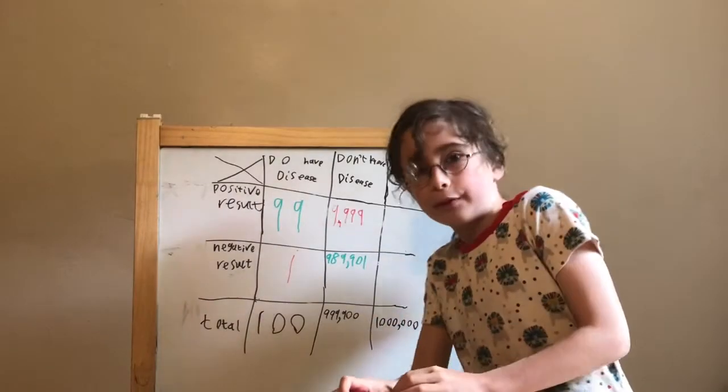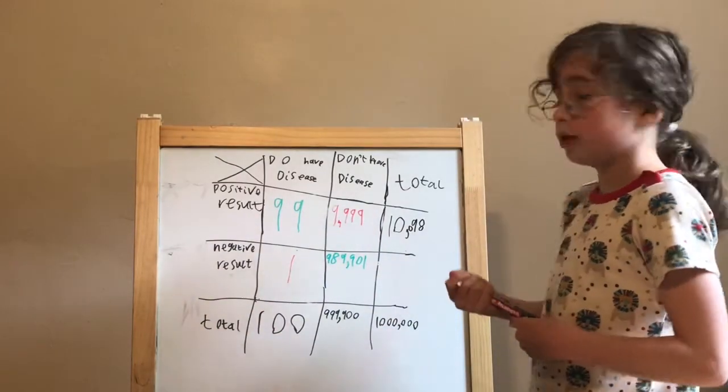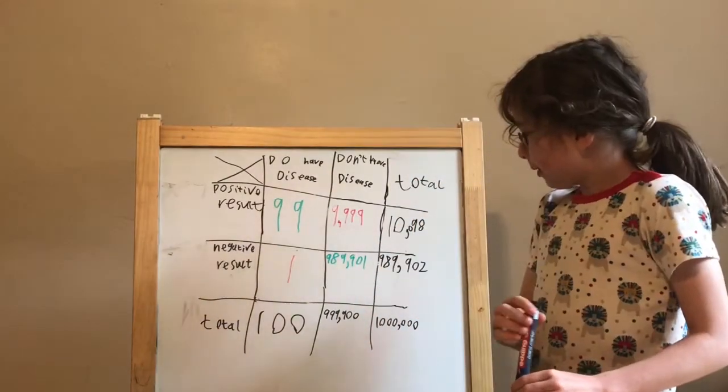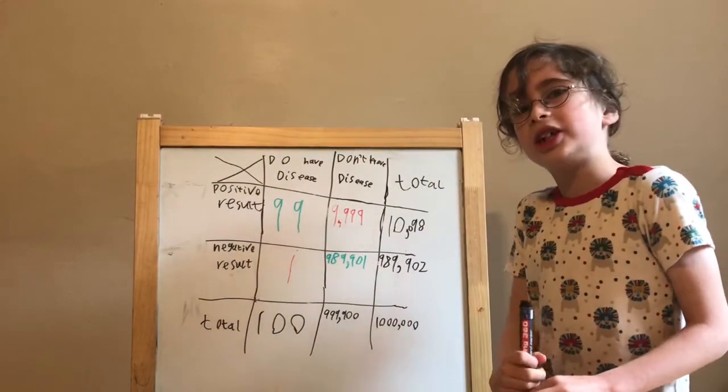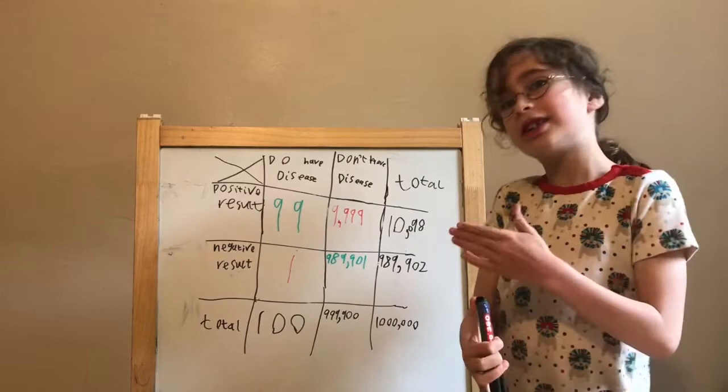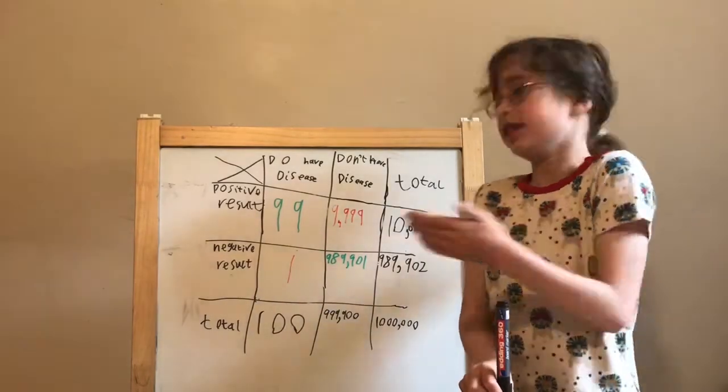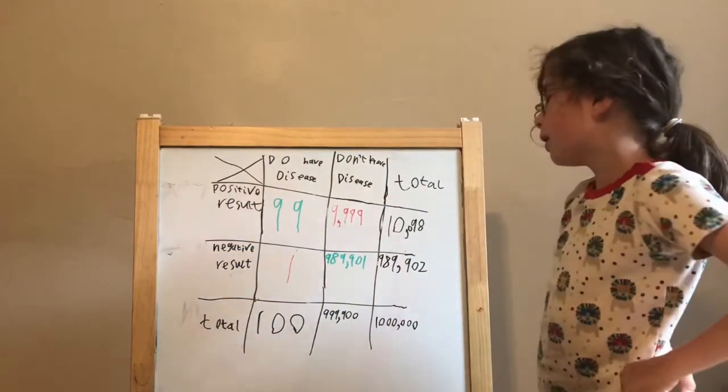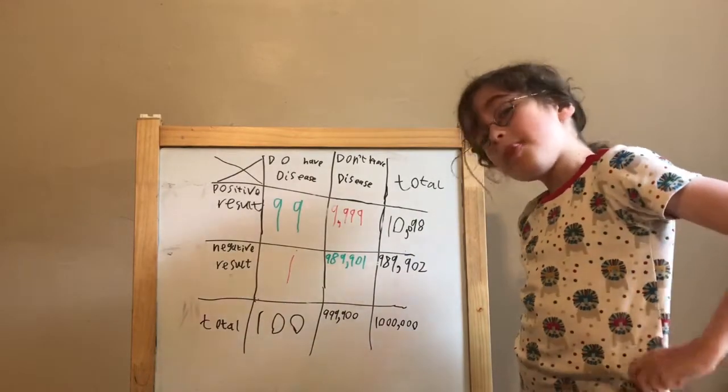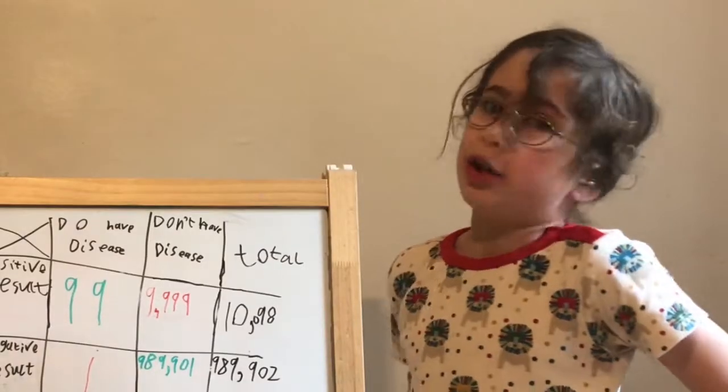Okay, 10,098. And we're going to do the same for negative. We only add one more. You would expect the machine to get most of them right, and yes it does, but when you actually look into it, it turns out it doesn't really work that well for rare diseases like this one. So in the negative row, only one of them was wrong. But in the positive row, 9,999 were wrong. Not that good a test.